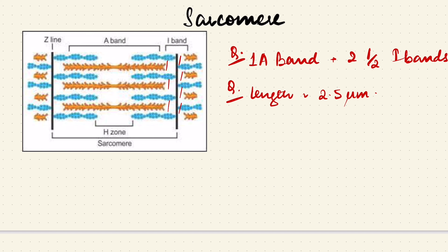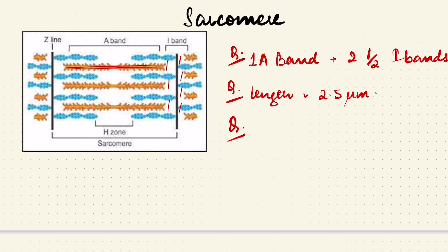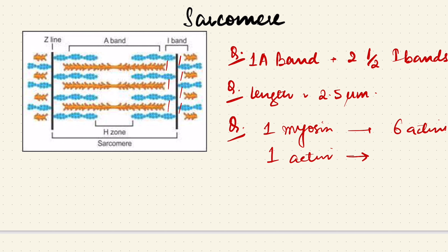Another very important question: one myosin filament is surrounded by how many actin filaments? The answer is six actins surround one myosin. And one actin filament is surrounded by how many myosin filaments? The answer is three myosins surround one actin. These are important one-liner questions that have been asked multiple times.